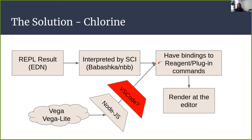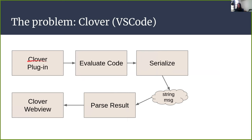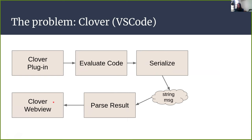In the VS Code world, things are more complicated. The Clover plugin is something in the web view, and when I render things it's another thing altogether. So I evaluate code, I serialize — this is a string message — I parse the result, I render in the web view, but if I have something that's Node, I must serialize everything in a string and it will never work. I mean, this is a callback — how do I call back something to here? It's impossible.